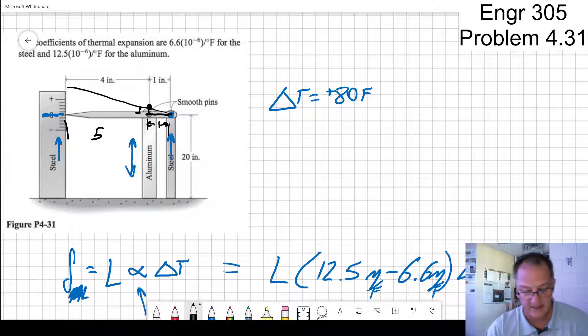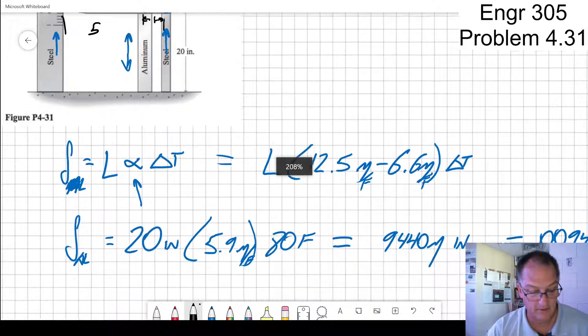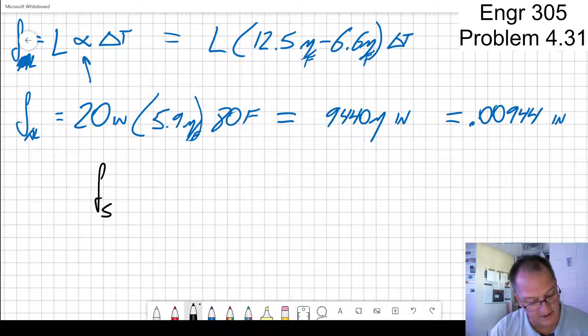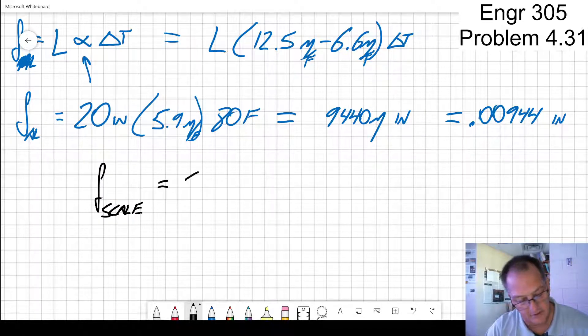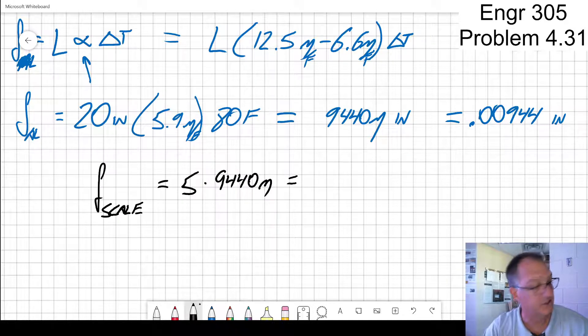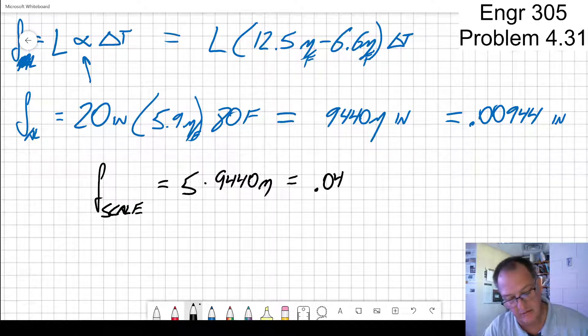So I take this growth, right? I take that growth and I multiply by 5. So delta at the scale is equal to 5 times the 9,440 micro is equal to 0.0472 inches.